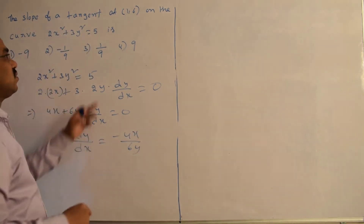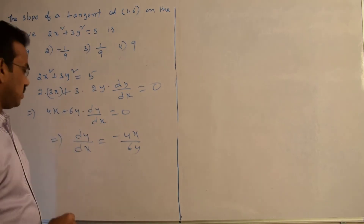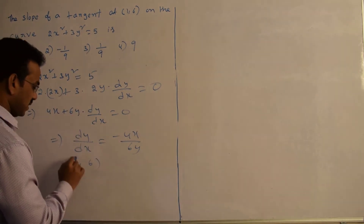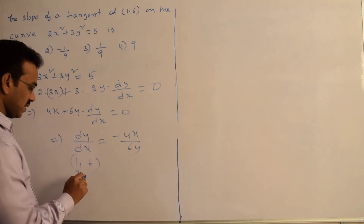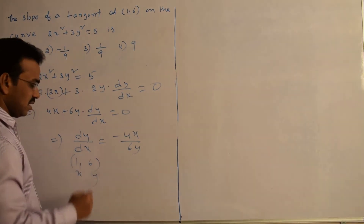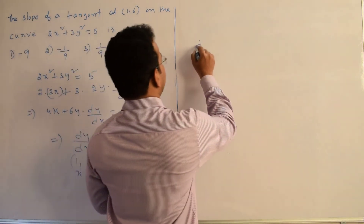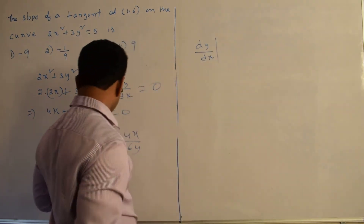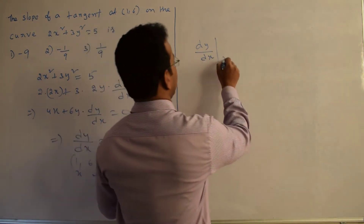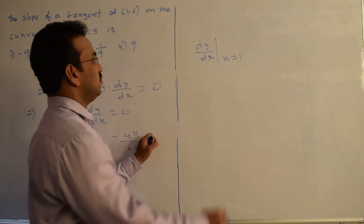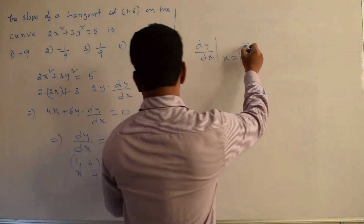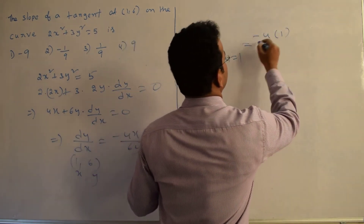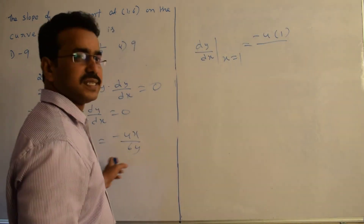Now we require the slope at the given point, so we substitute. The given point is (1, 6), which means x is 1 and y is 6. Therefore, dy by dx at x equals 1 is equal to minus 4 into 1 divided by 6 into 6.